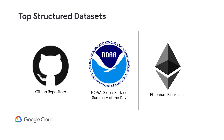We also have datasets in BigQuery, including the GitHub repository, the NOAA Global Surface Summary of the Day that provides meteorological observations going back to 1900, and the Ethereum blockchain, along with six other cryptocurrencies. But don't just take my word for it — let's see a demo, specifically looking at how you can use some of our geospatial datasets to support your workflows.